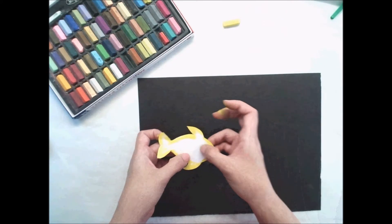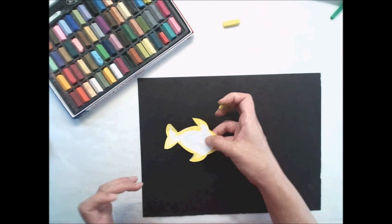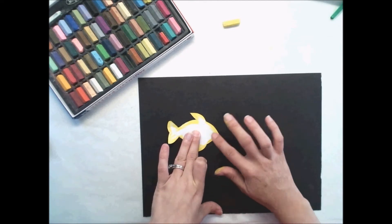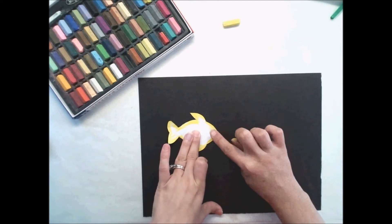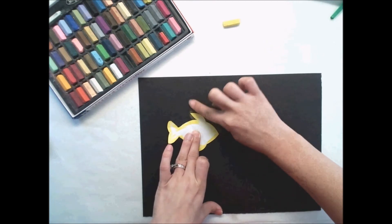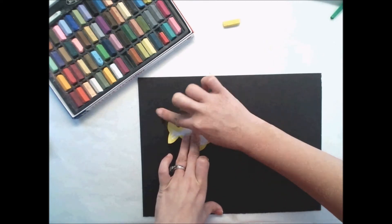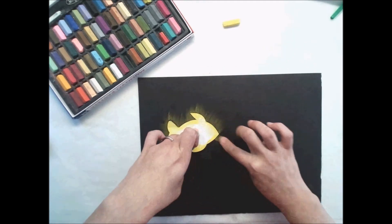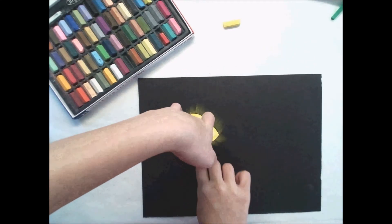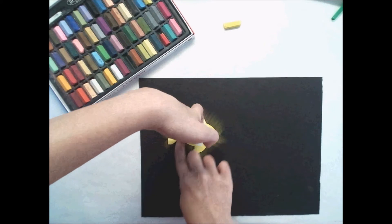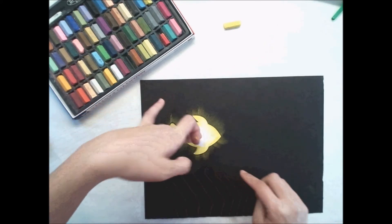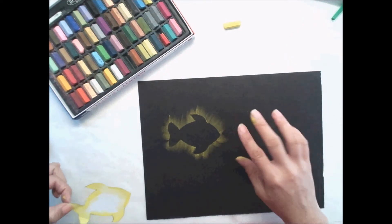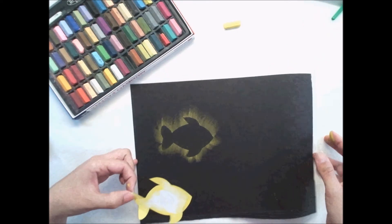And I'm going to decide where I want this fish to go. I think I'd like him to go right here. With one finger, I'm going to hold him down. And then with the other finger, I'm going to push off that yellow. That's what's going to create that illuminating glow of the fish. Go all the way around. Make sure you don't move your fish. You need him to stay still. And there's my first fish. Be careful with your hands, they're chalky and you don't want chalk all over the place.